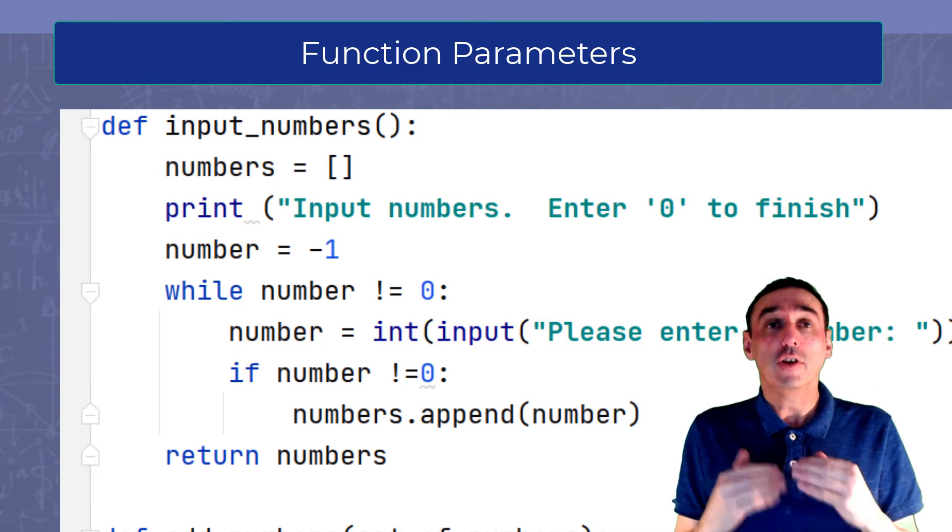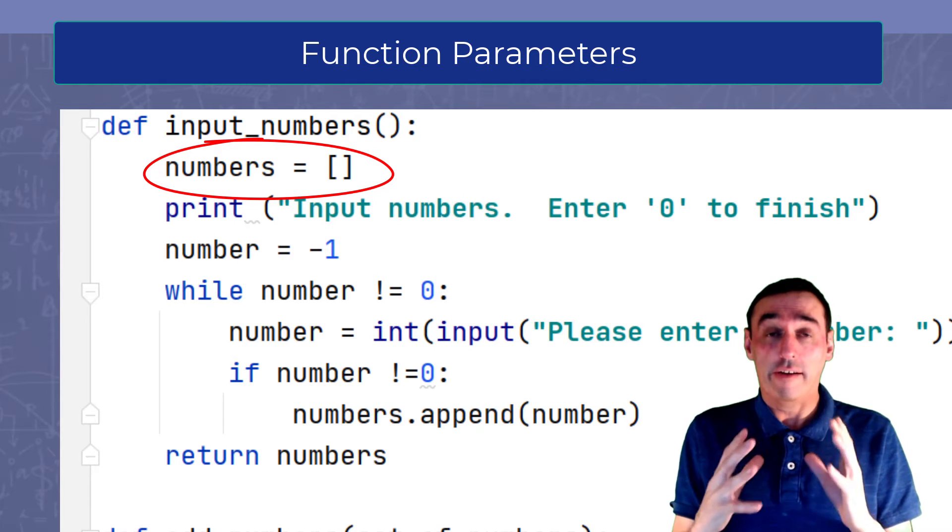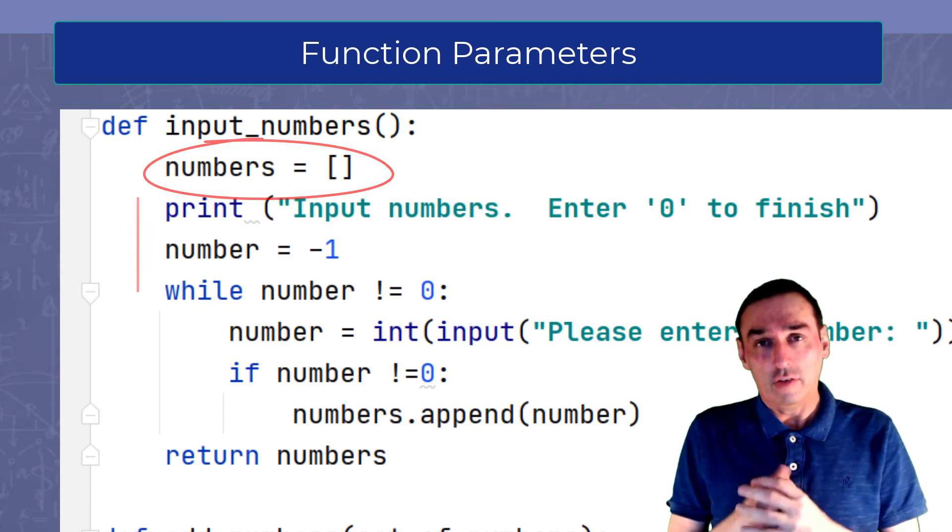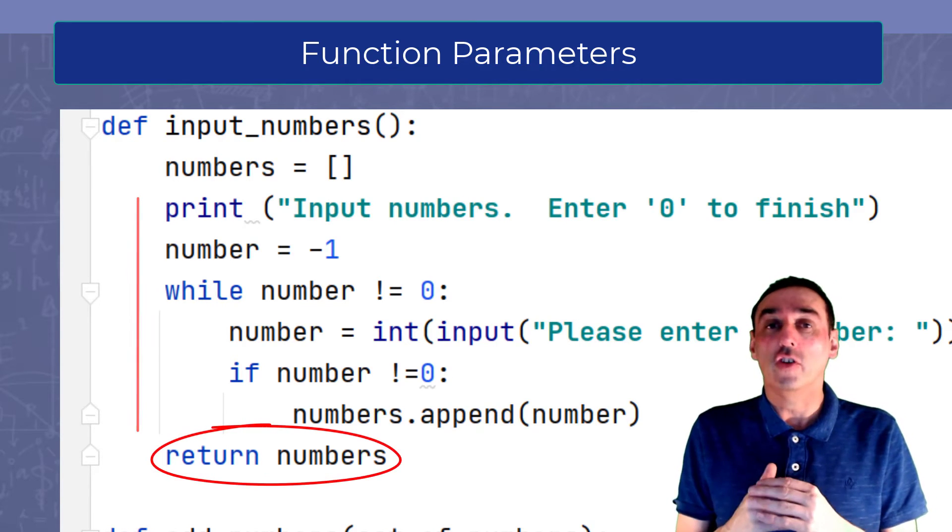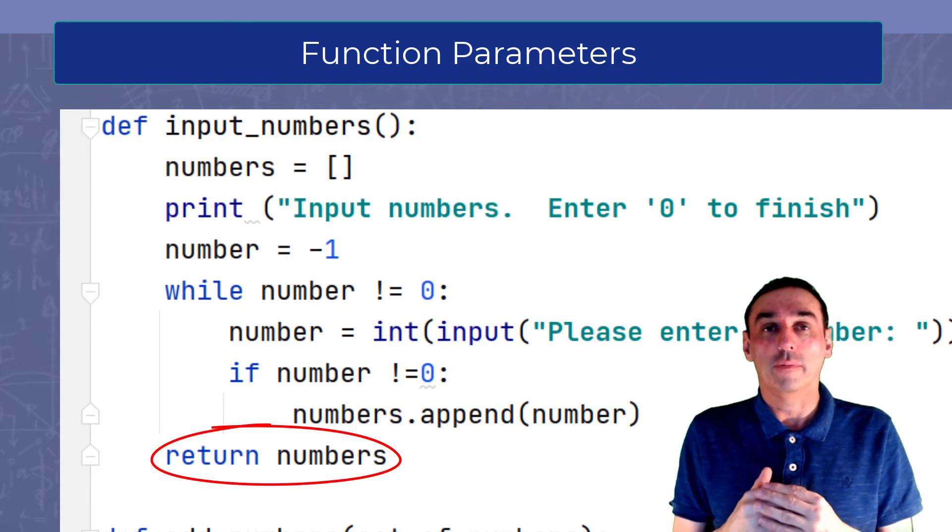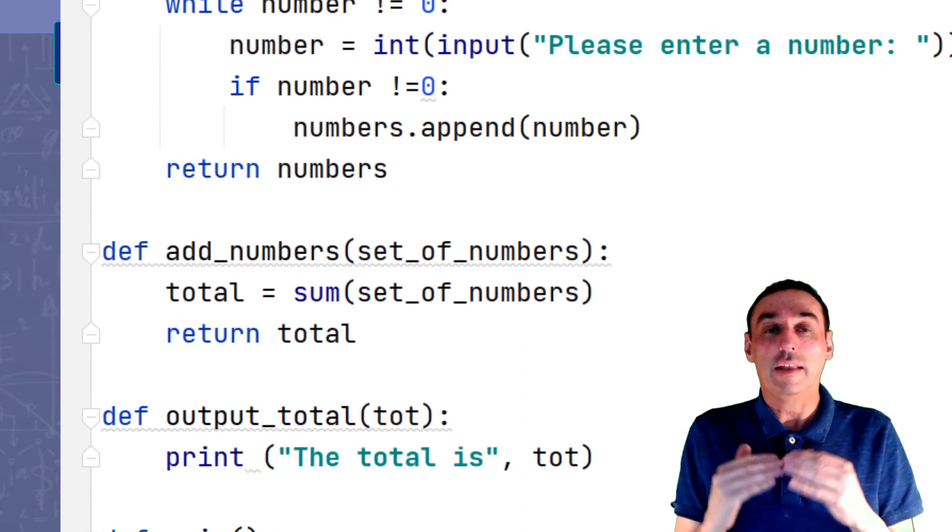So if you look at the first function input_numbers, we have defined the numbers list as a local variable. We then collect the input from the user as normal, and then we return the numbers at the bottom. So we go back to where this function was called from at the bottom, so that numbers list will be returned here and be assigned to another numbers list within the main function.